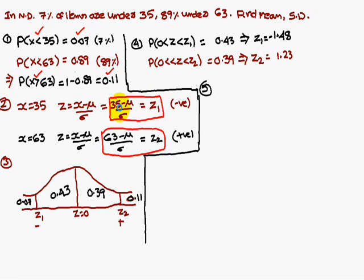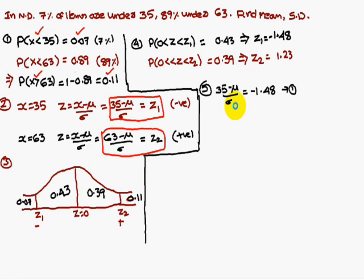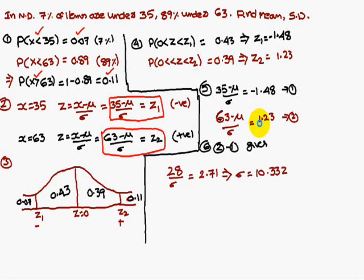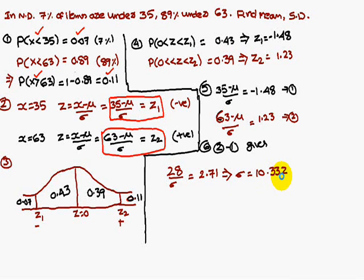Now set up the two equations: (35 − mu) / sigma = z1 and (63 − mu) / sigma = z2. Substituting the z values: (35 − mu) / sigma = −1.48 and (63 − mu) / sigma = 1.23. Subtracting equation 1 from equation 2: 28 / sigma = 2.71, which gives sigma = 10.332.